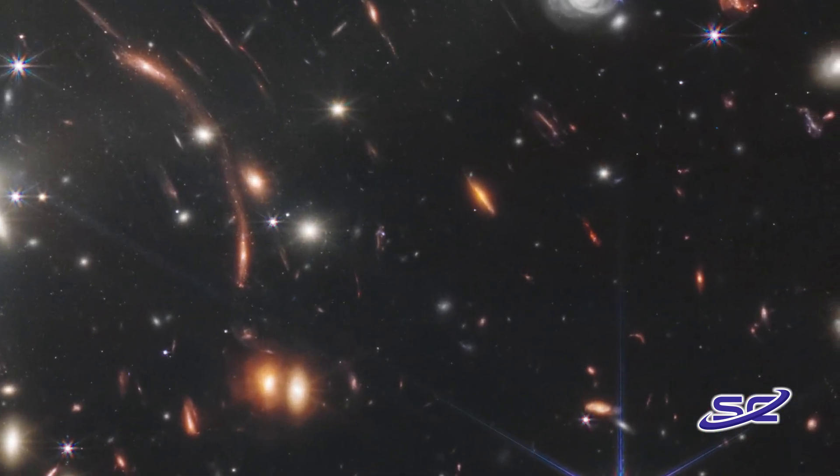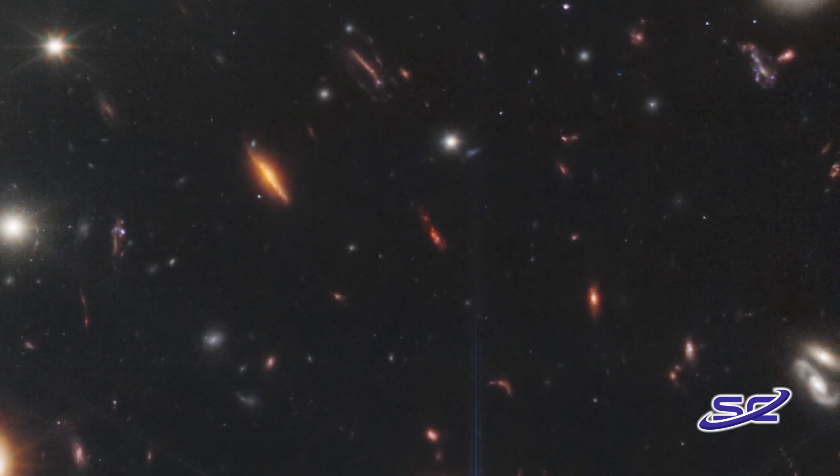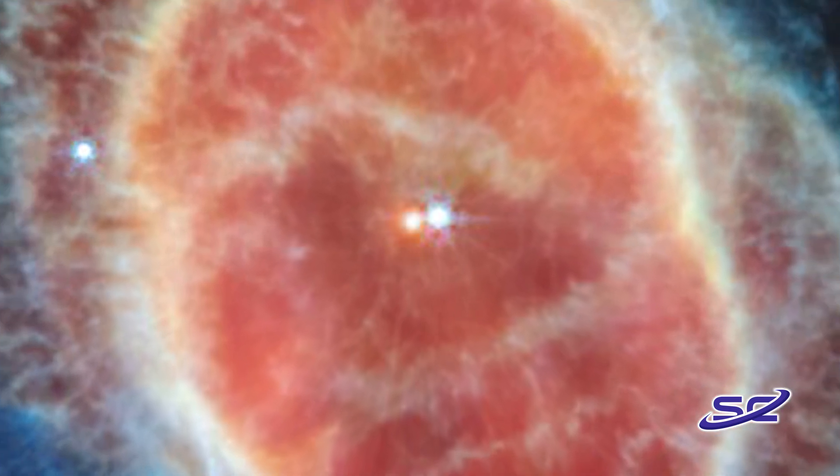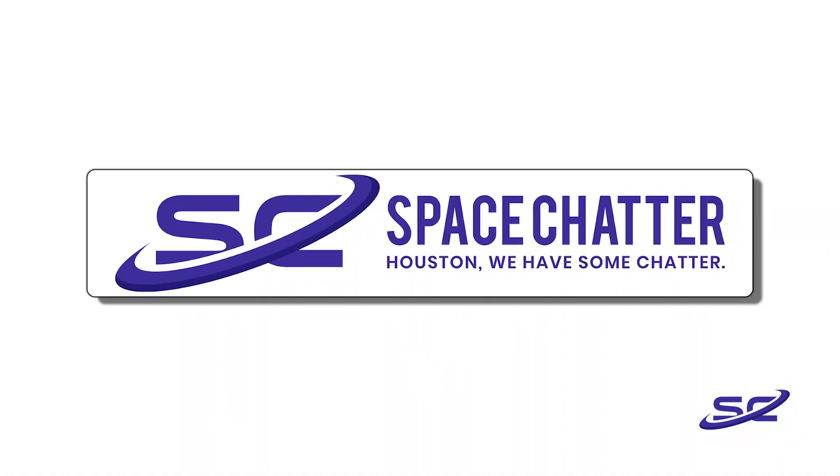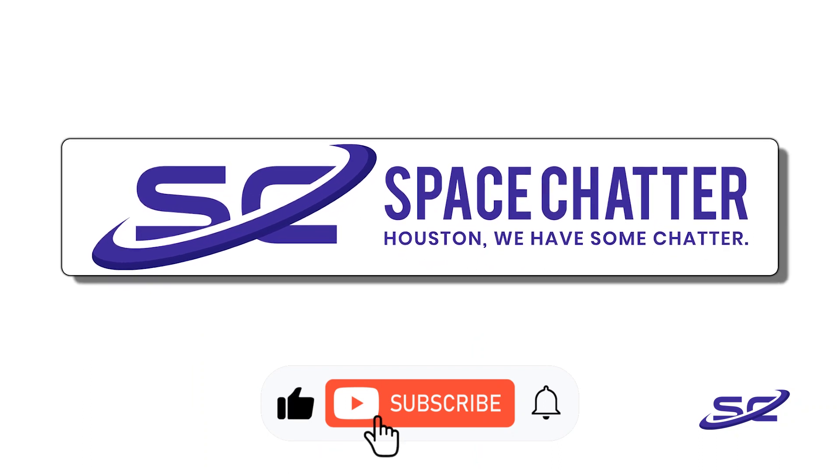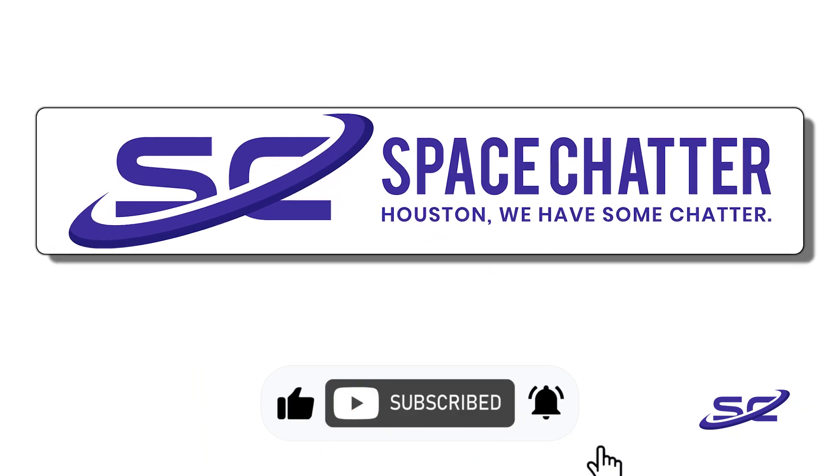NASA has revealed five of the first images from the James Webb Space Telescope, or JWST, to its friends. That and a report at spacechatter.com. You can like and subscribe to get the latest information.